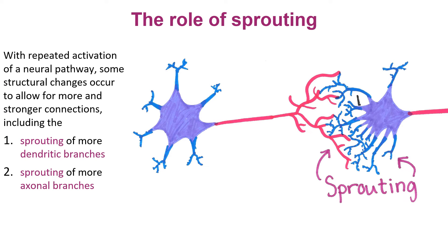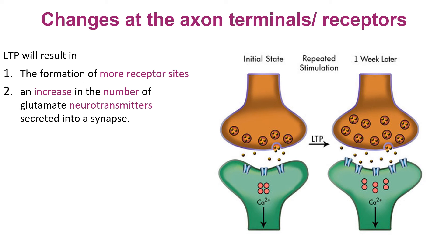What about the changes in the cell itself? If we look at it postsynaptically, we get the sprouting of additional dendrites, and these additional dendrites have additional receptor sites. We also have presynaptically some more axonal branching — a sprouting of more axonal branching from the sending end of the neural pathway, and sprouting of dendritic branches on the receiving end. And if we look at an individual dendritic spine, we also see the formation of additional receptor sites as a result of the LTP mechanism on the postsynaptic end.